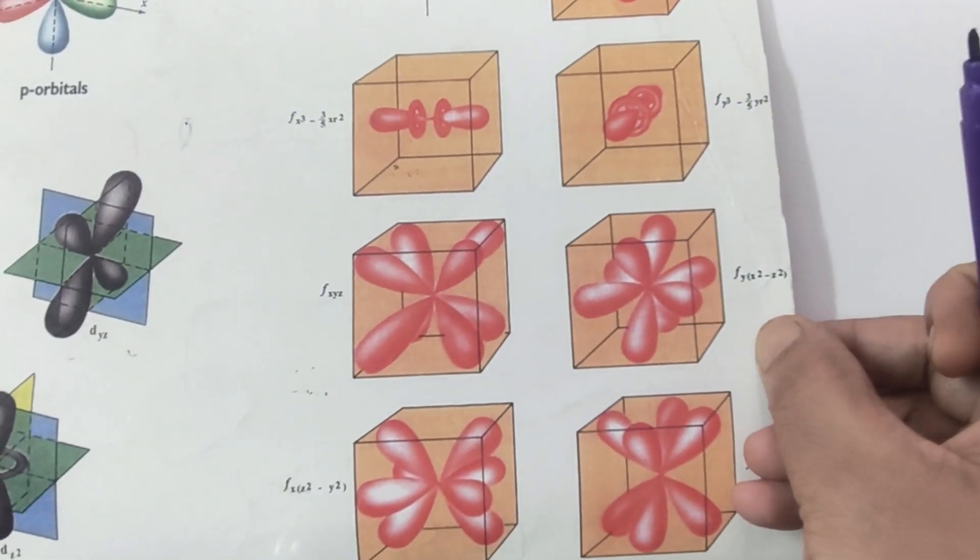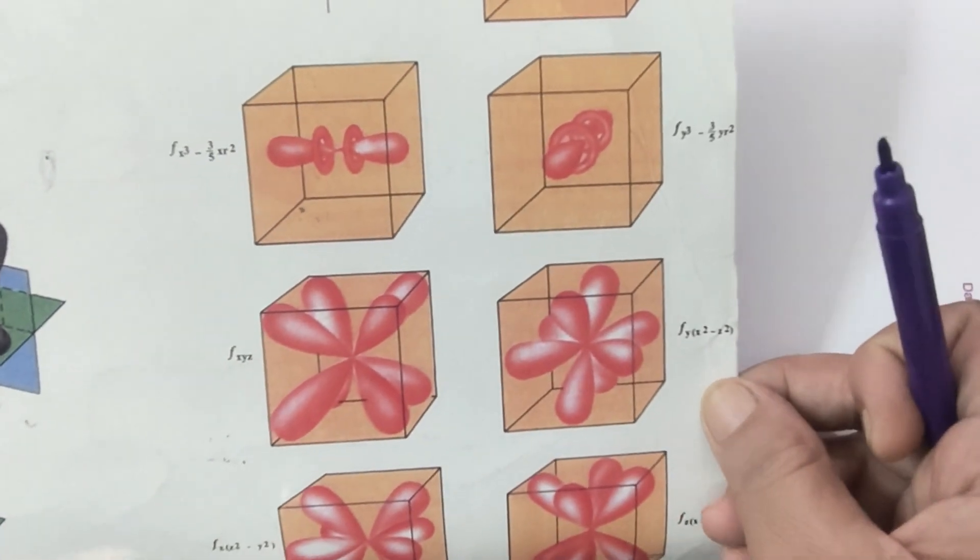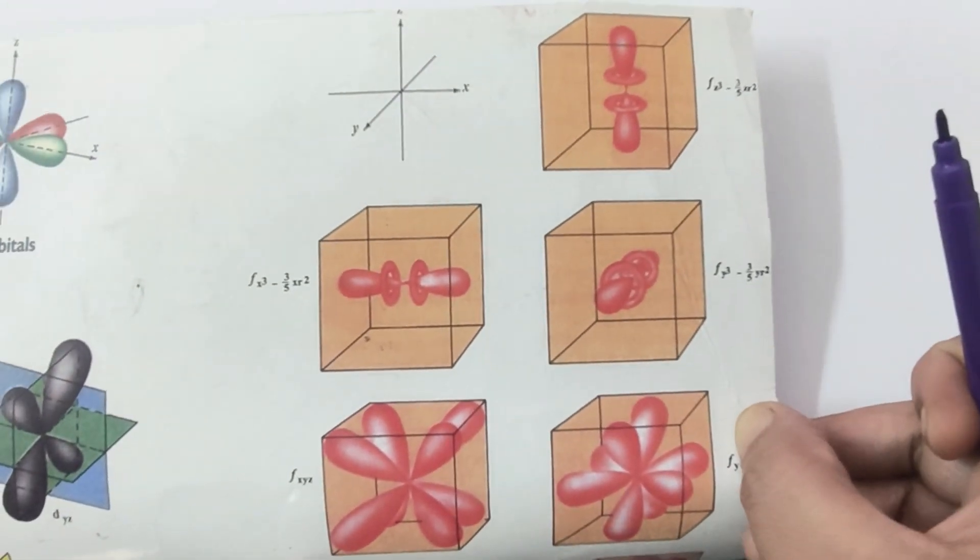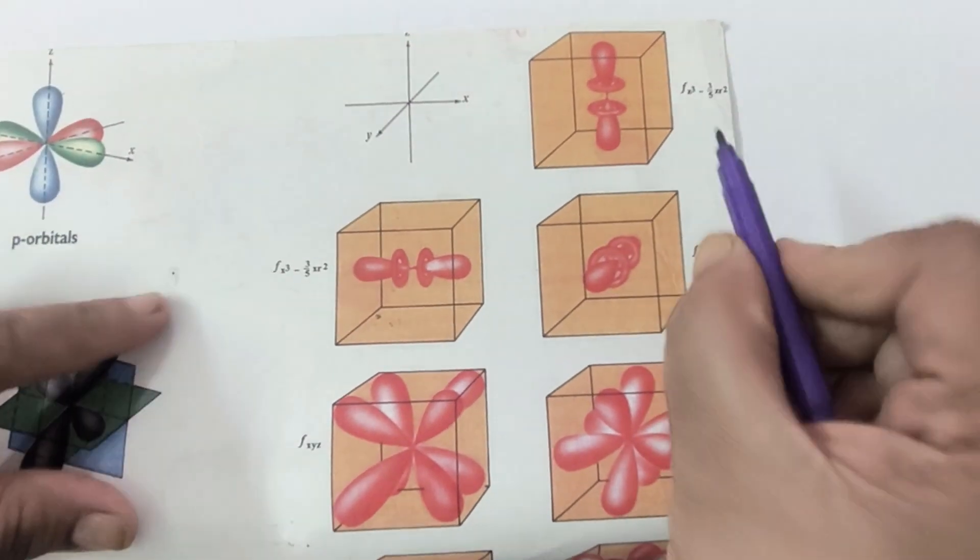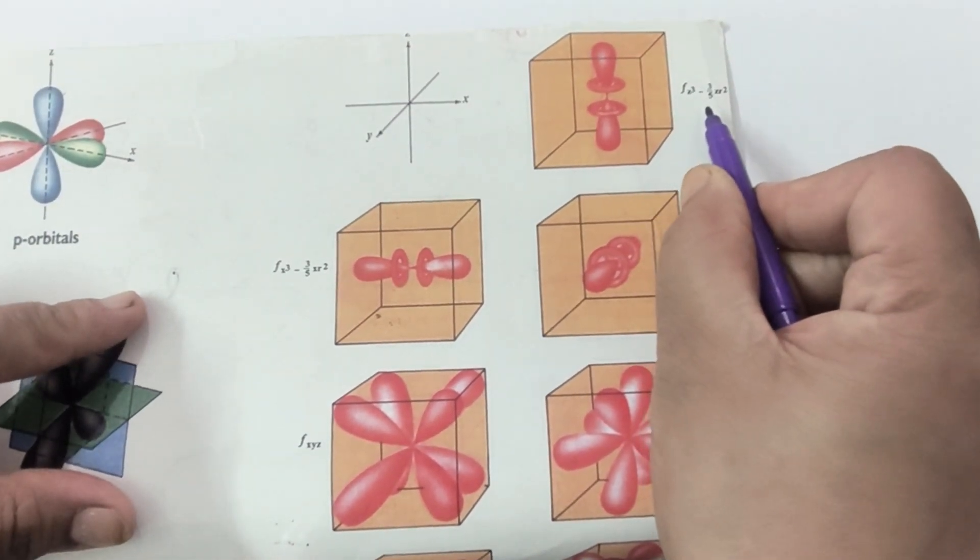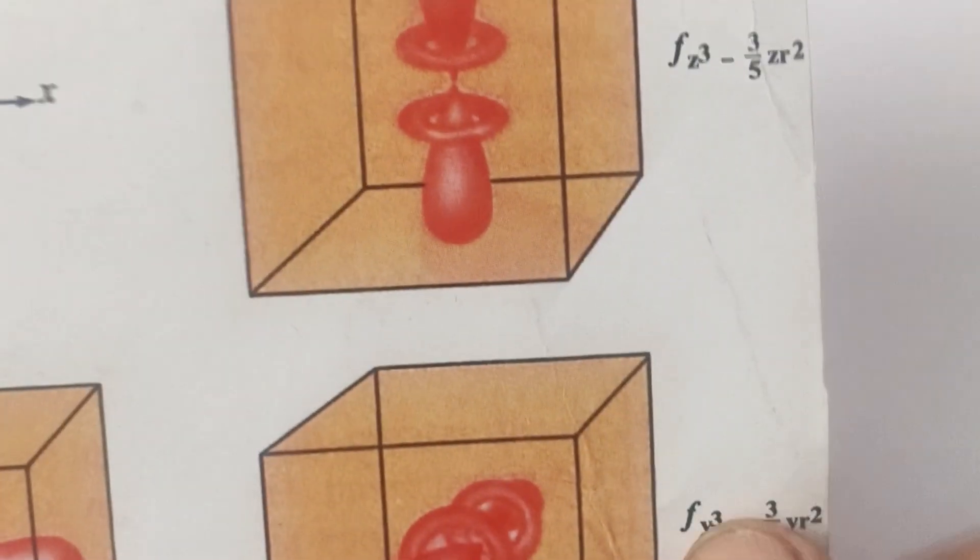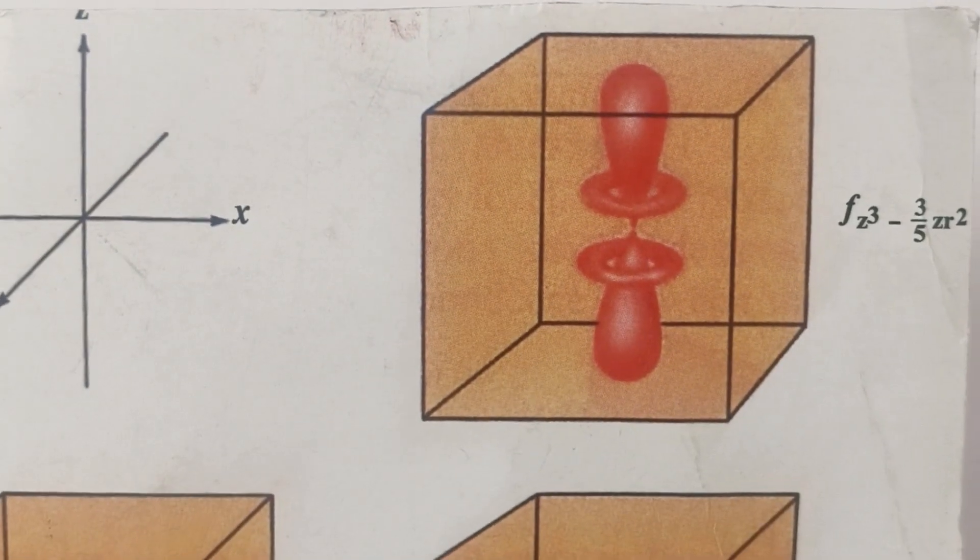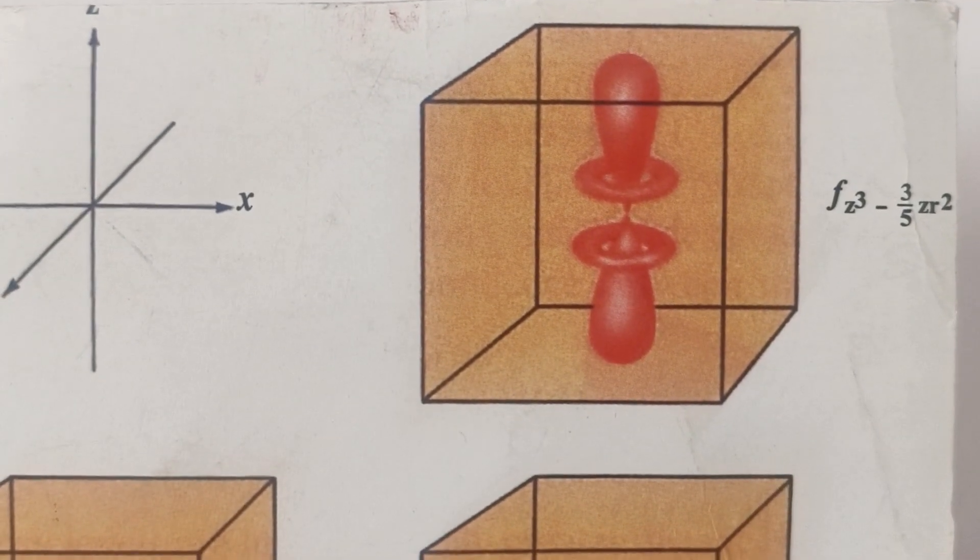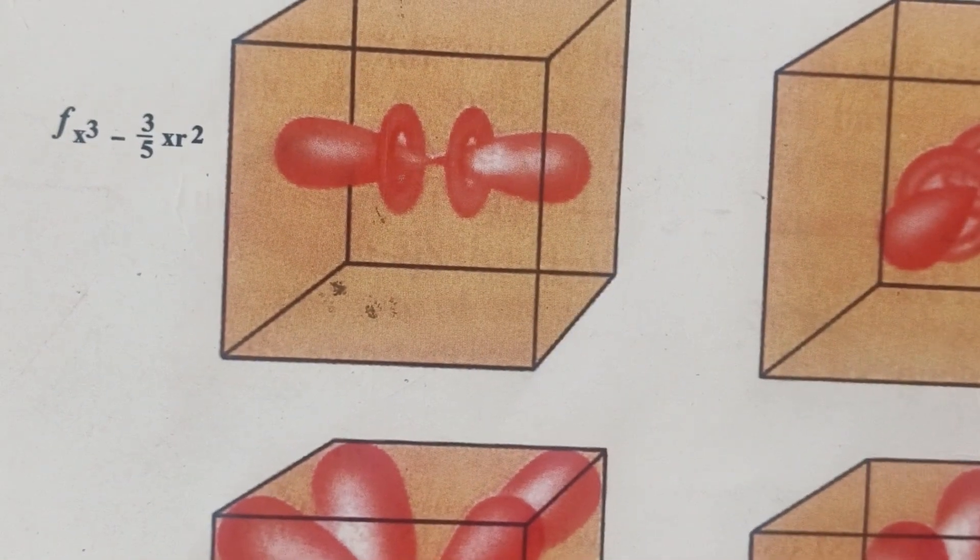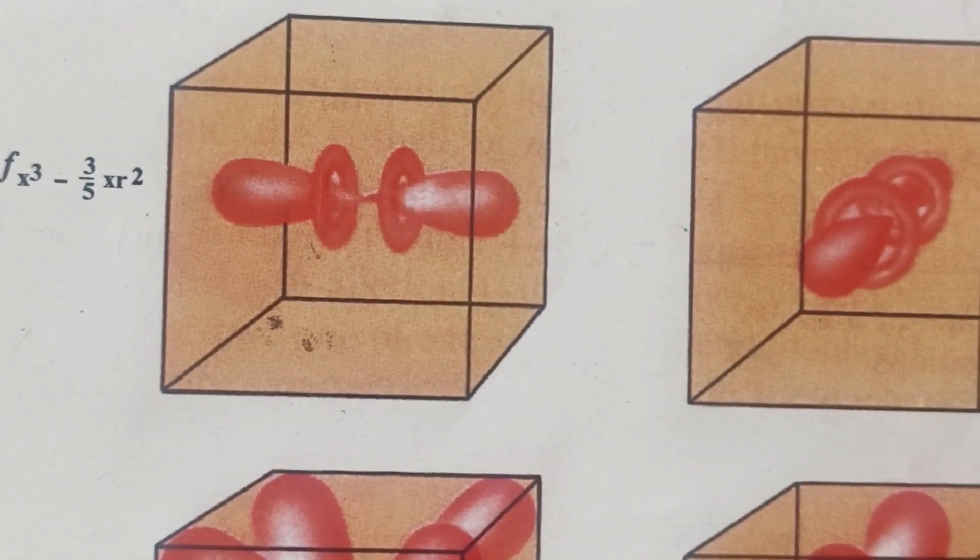Now today mainly we have to discuss the shape of the f orbital. Here you can see the shapes of the f orbital. You can watch there are how many orbitals? f, seven orbitals. The first orbital name is f z cube minus 3 by 5 z r square.